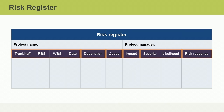Another identifying characteristic that could be included in the risk register is risk status, which could be recorded as pending, current, or ended. The description column should contain a clear and concise description of each identified risk. The cause column should identify the cause or causes of each identified risk. Identifying the root causes of risks is an important step in developing effective risk responses.